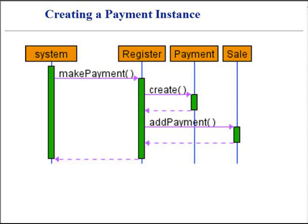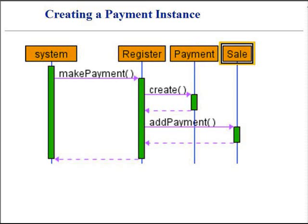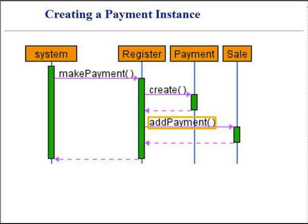Assume we have a need to create a payment instance and to connect the new object with the corresponding sale. What class should be responsible for this type of action? Since a register records a payment in the real-world domain, the register is a candidate for creating the payment. The instance of the register class can then send a message to add payment to the sale object, passing along the new payment as a parameter. This assignment of responsibilities strongly couples the register class to the knowledge of the payment class.